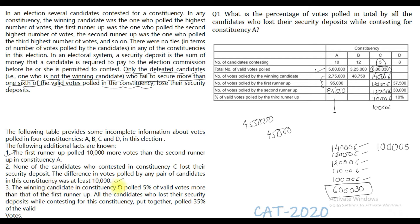The winning candidate in constituency D polled 5% of the valid votes more than the first runner-up. The first runner-up got 37,500 votes, so the winning candidate will get 37,500 plus 5% of the valid votes. All the candidates who lost their security deposit while contesting for constituency D, put together, polled 35% of the valid votes. The second runner-up got 30,000 votes. Let's assume that three people managed to get more than one-sixth of the votes, meaning the remaining five will lose their security deposit, and that value must equal 35% of the total valid votes.